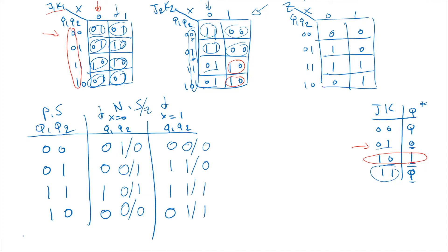Now we do state assignments. We assume A=00, B=01, C=11, and D=10. If state assignments are not provided in the problem, you can make this assumption; otherwise, follow what is given.